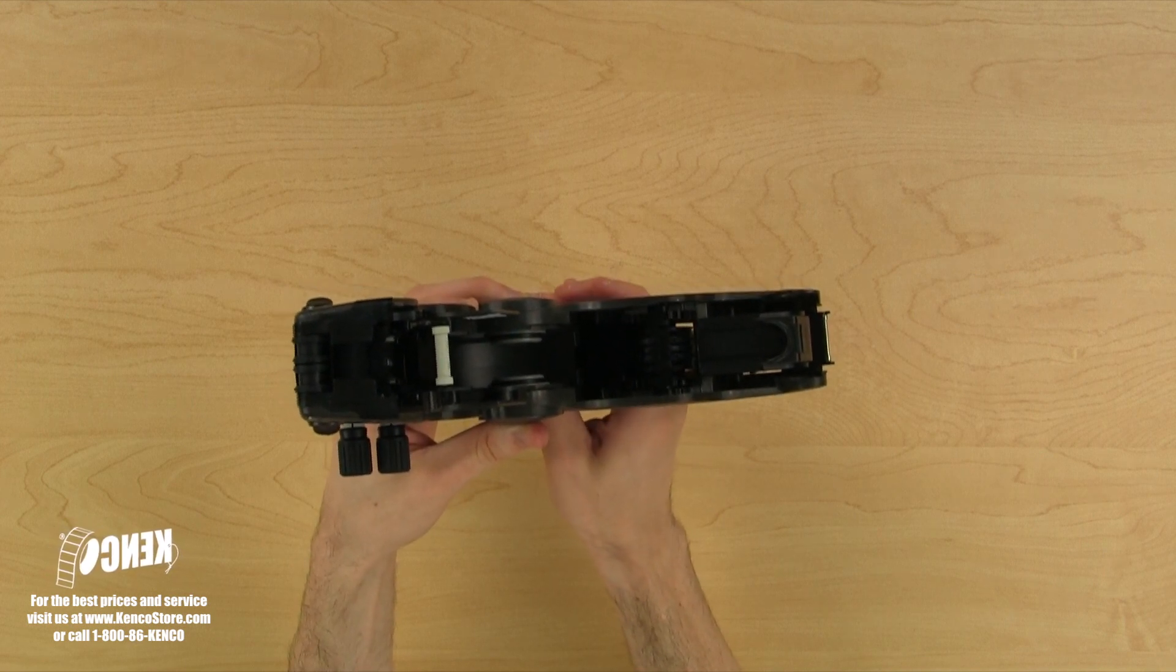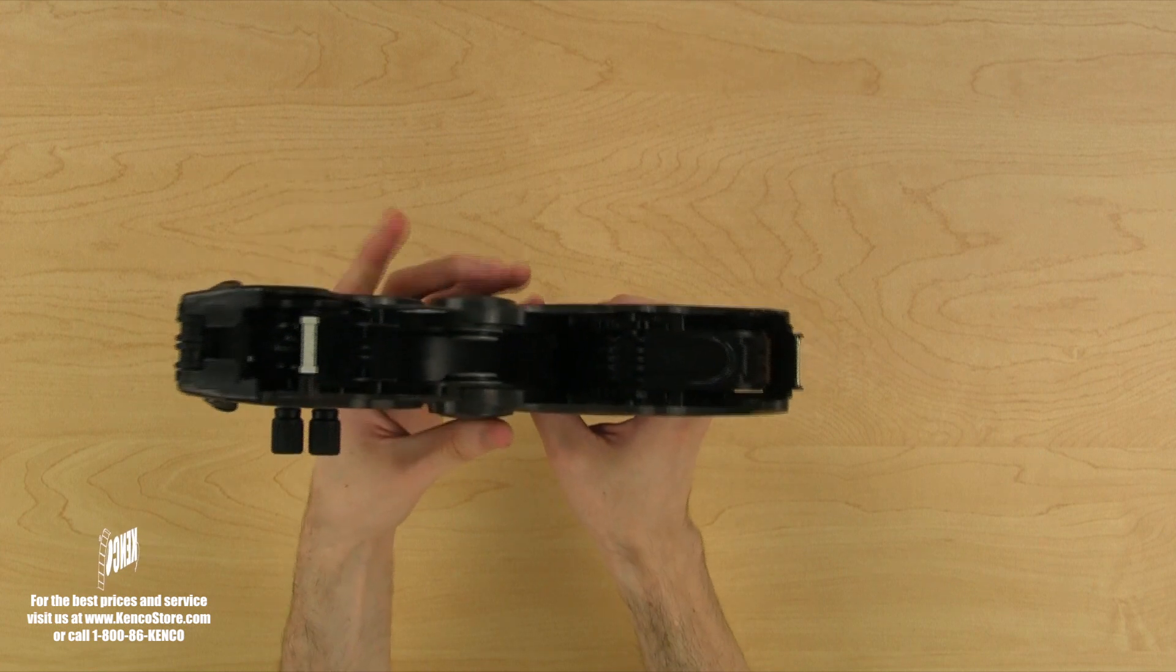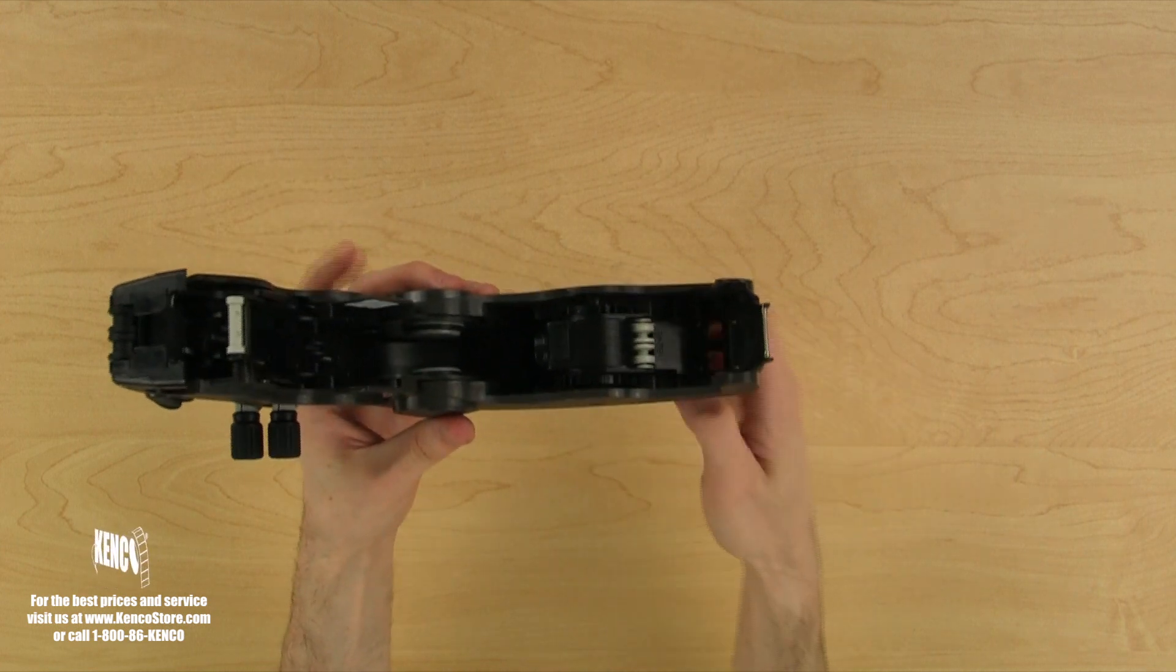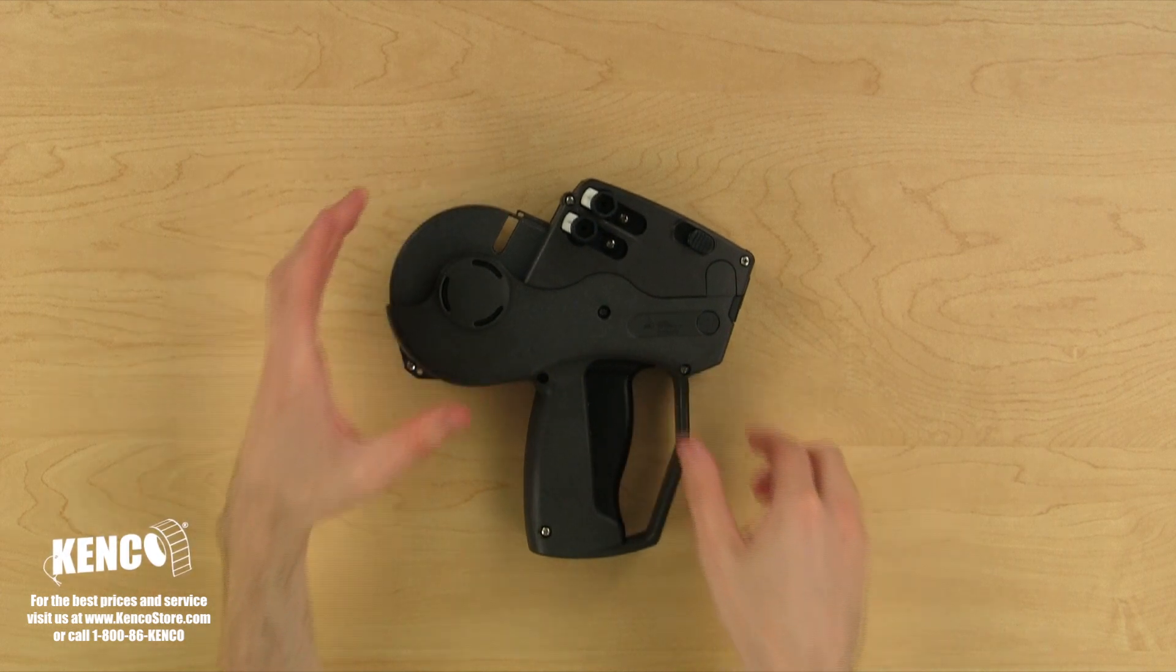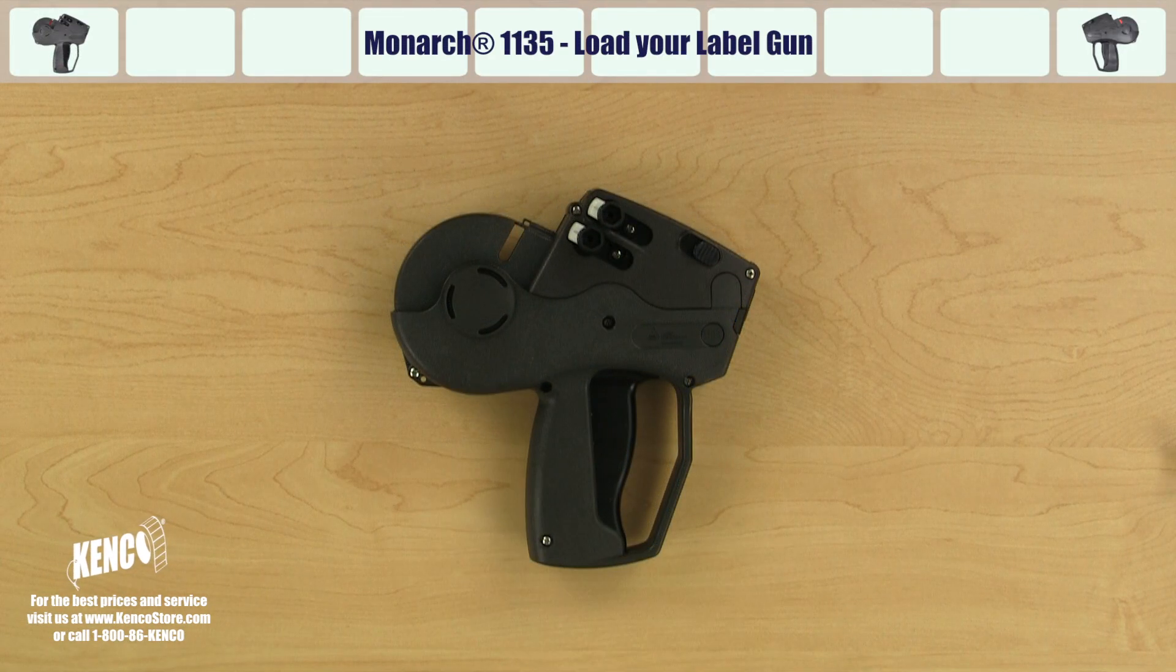It's important to note that the print location on the Monarch 1135 series cannot be adjusted. Now that we are more familiar with the various components, let's learn how to quickly and properly load the Monarch 1135 series labeler.